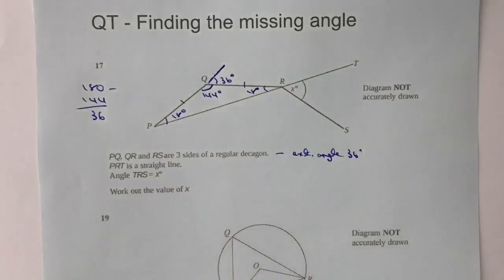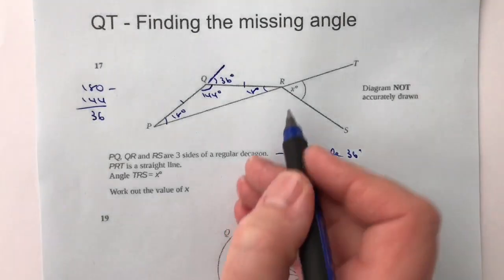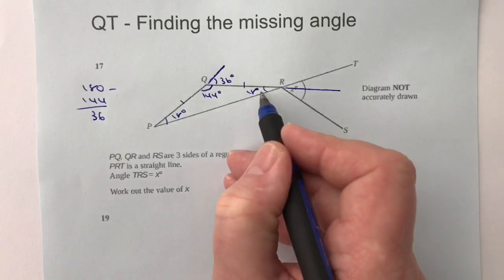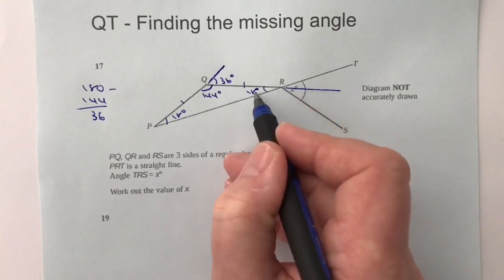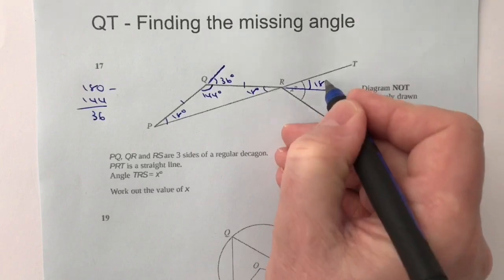Okay, now this is where it gets a little bit tricky to kind of show on the video, but hopefully you can appreciate, particularly if you print this particular worksheet off and have a go at it for yourself, that if I draw a line straight across there, I've got opposite angles. So 18 here means that I've got 18 degrees here.